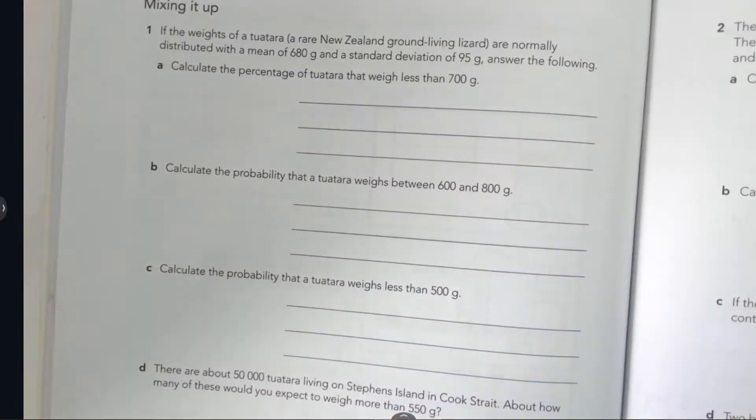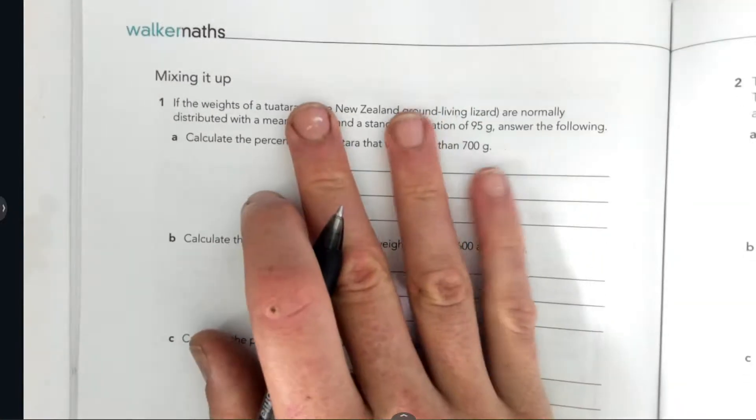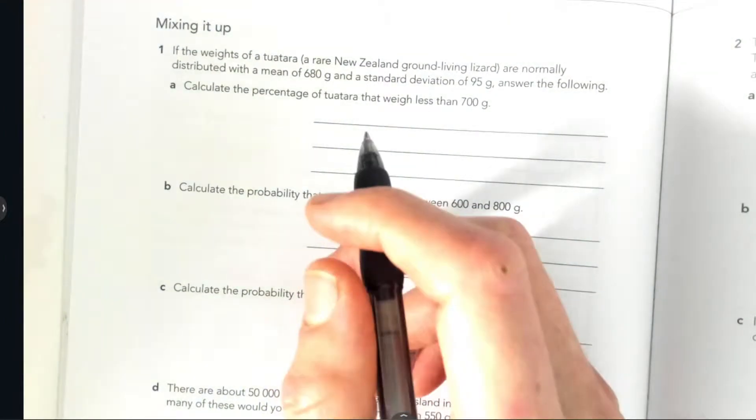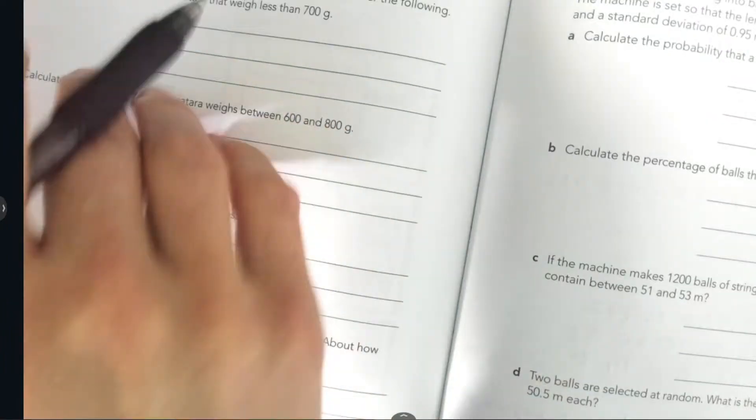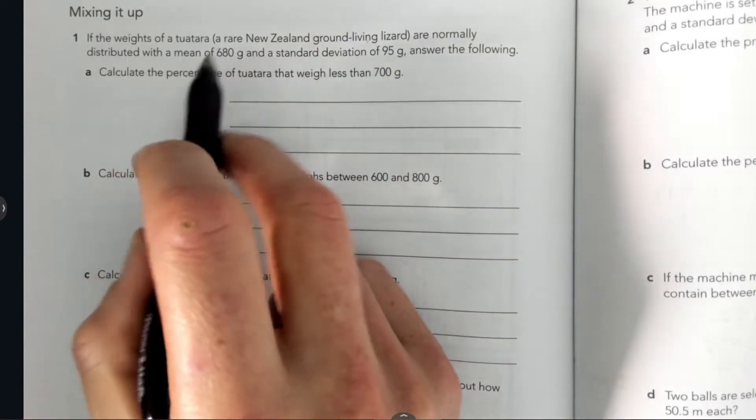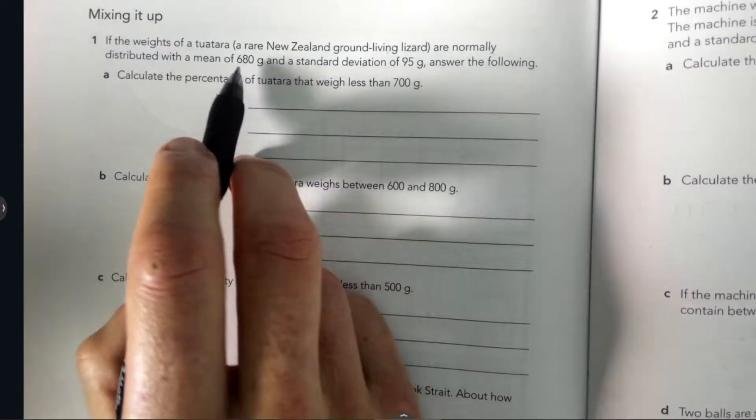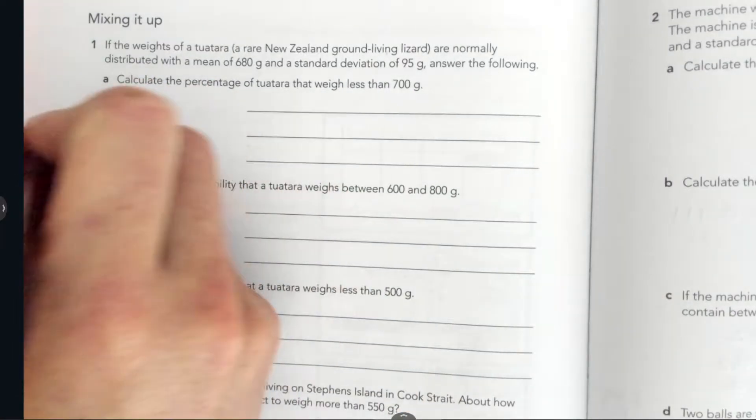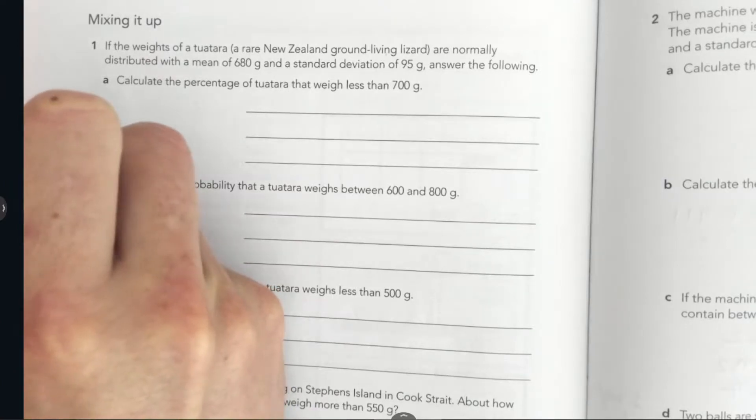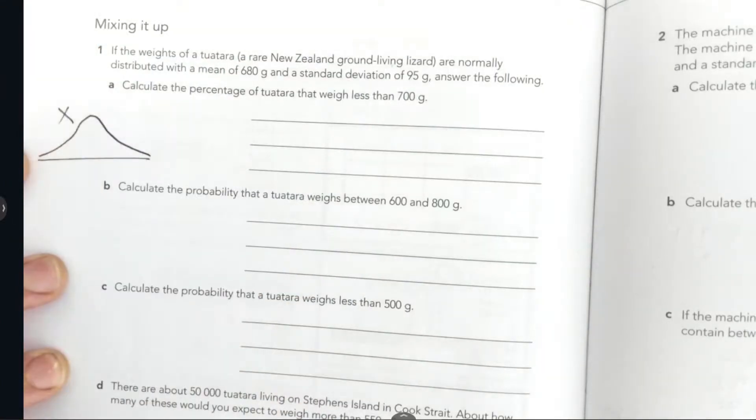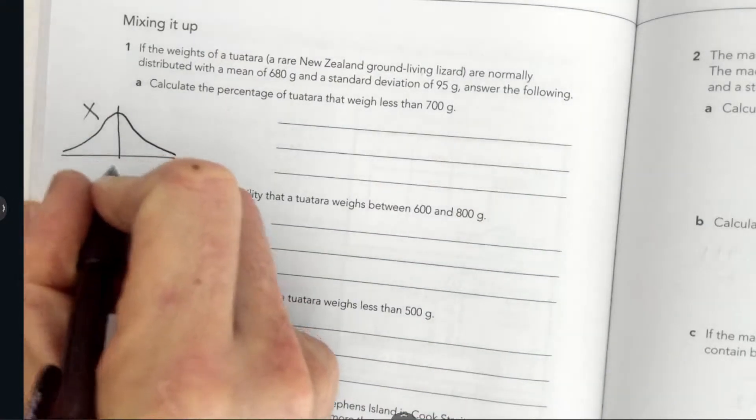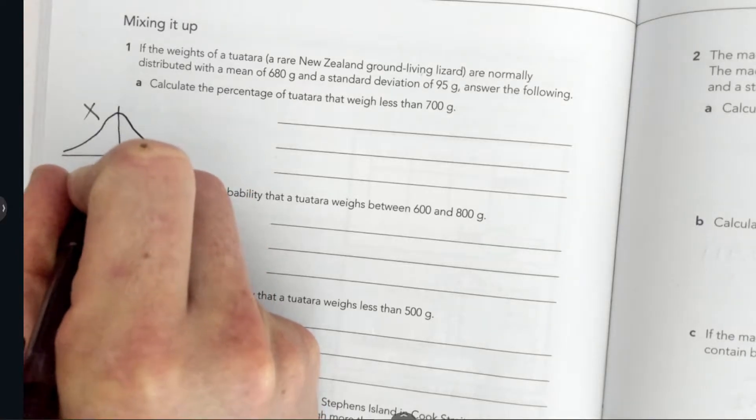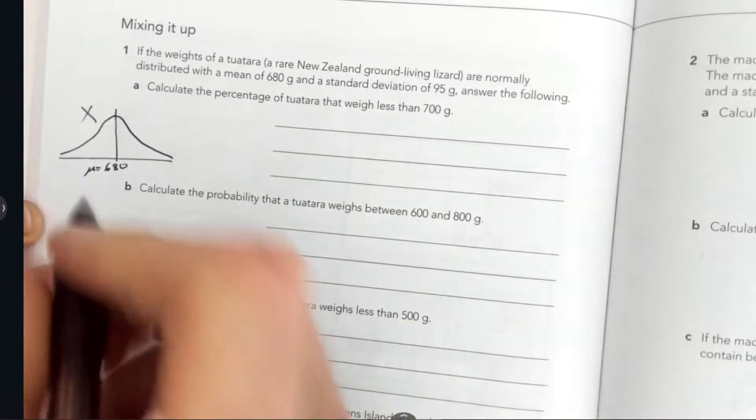Kia ora, we're doing page 76. I'm just gonna do a full walkthrough and you should be able to use this to complete pages 77 and 78. If the weights of tuatara are normally distributed with a mean of 680 and a standard deviation of 95, first thing I'm doing is I know what X is. X is a distribution of tuatara with a mean of 680 and a standard deviation of 95.